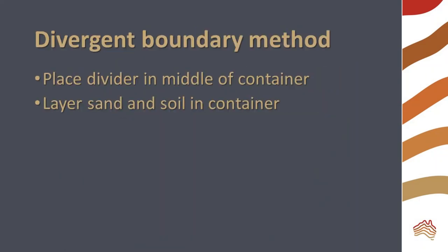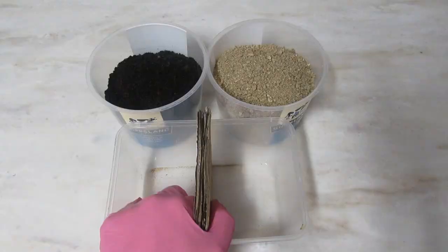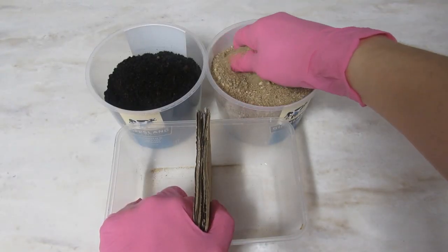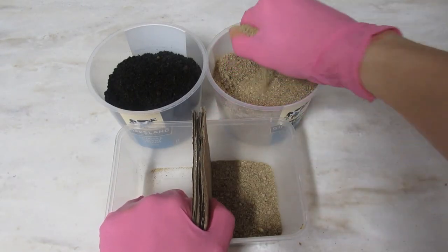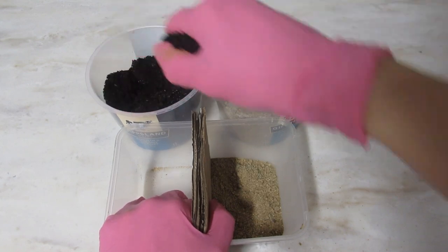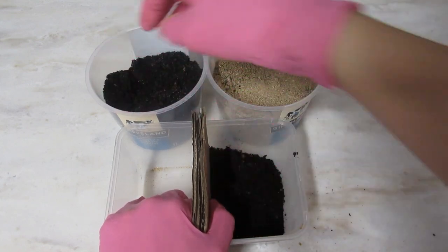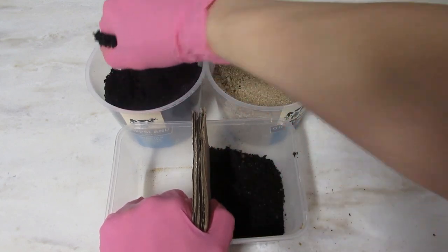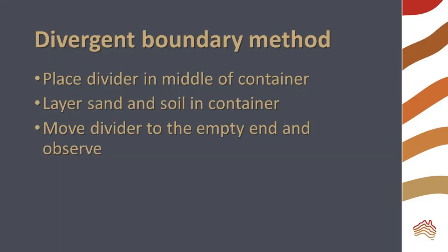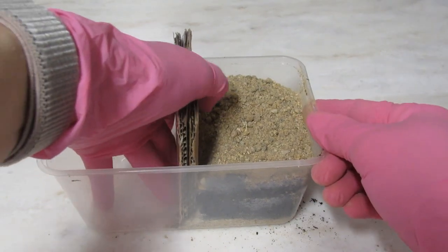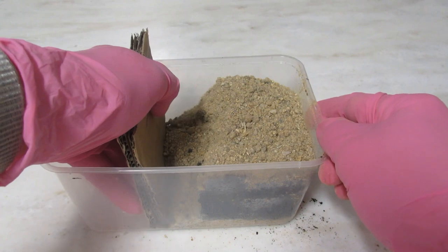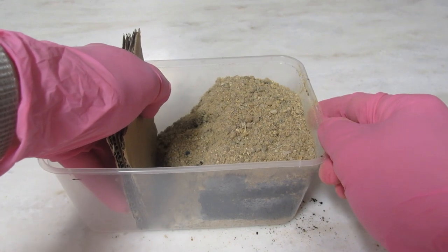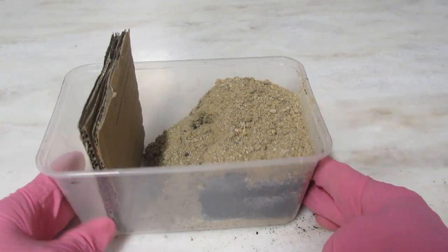To make your divergent boundary model, place the divider in the center of the container. Layer sand and soil in one half of the container and fill it nearly up to the rim. Move the divider toward the empty end of the container and observe what happens to the surface and layers. This simulates the pulling forces at a divergent boundary.